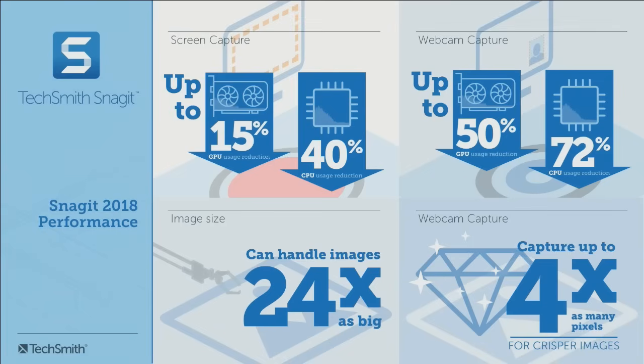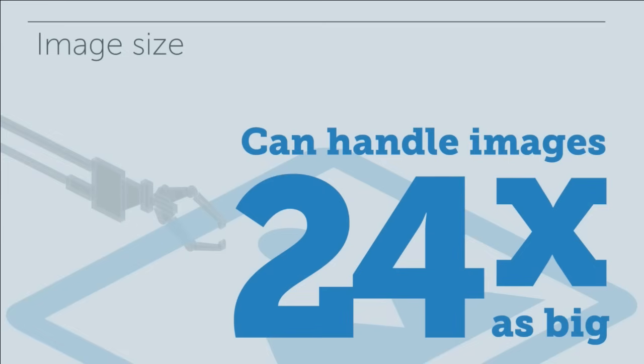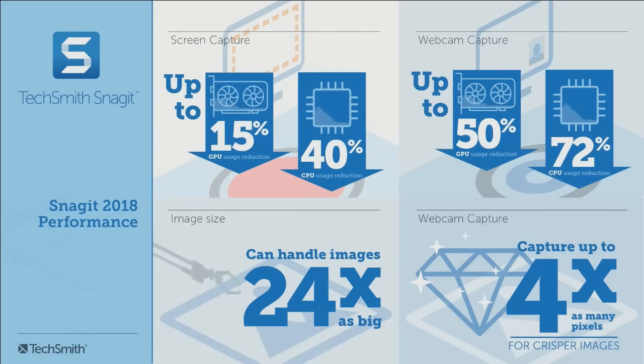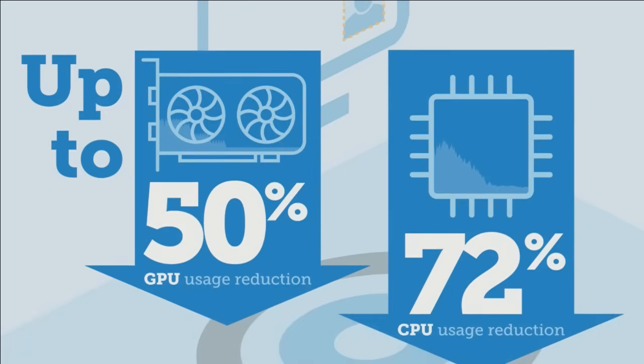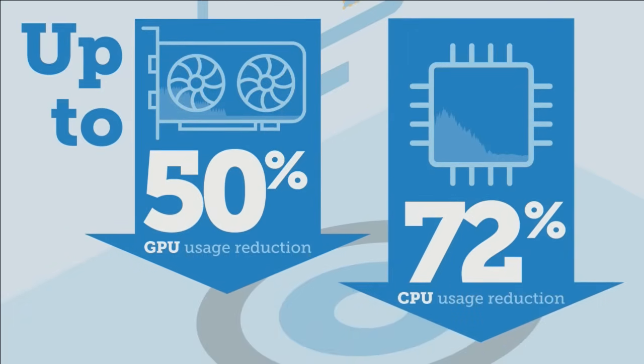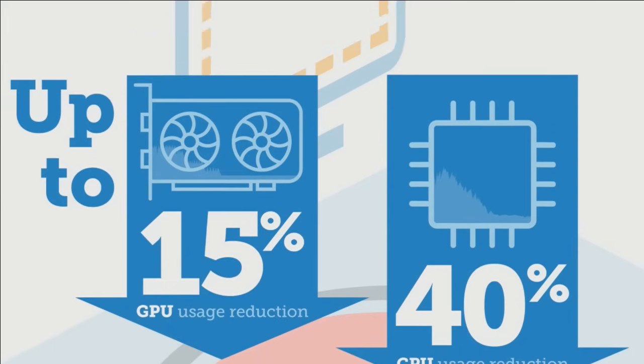Snagit on Windows is also getting its own refinements. It will now be a 64-bit app with performance improvements to help you work faster — you can capture and edit much larger images. In version 13 you were limited to 5,000 pixels per side; now it can handle 24 times as many. For video, you can now get 4 times as many pixels when recording webcam at 72% of the CPU load, and 40% less CPU usage when recording the screen — meaning silky smooth video without lagging your machine.